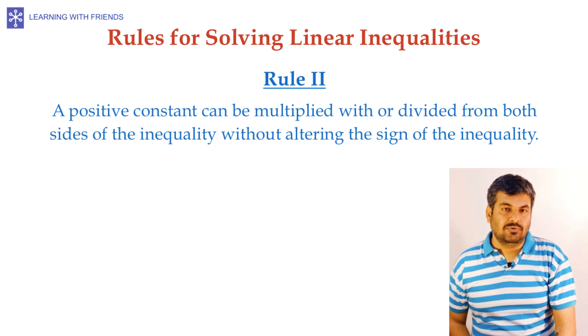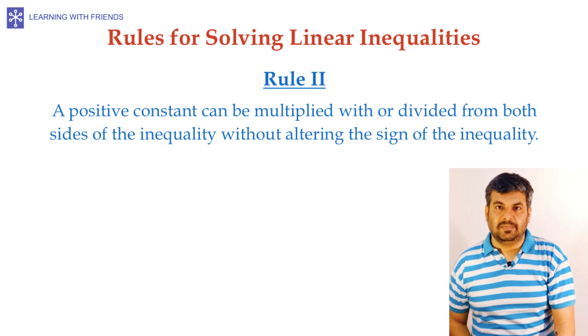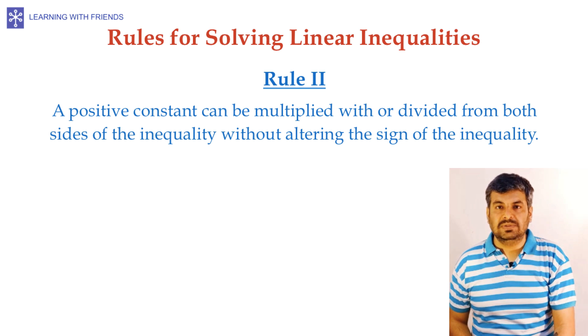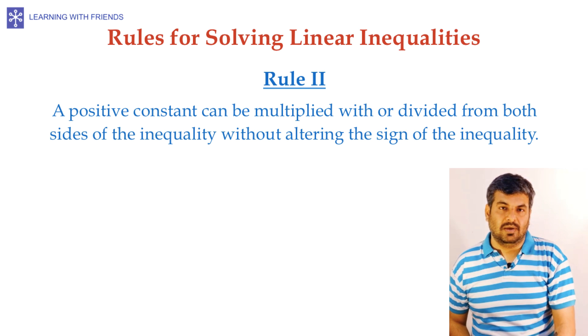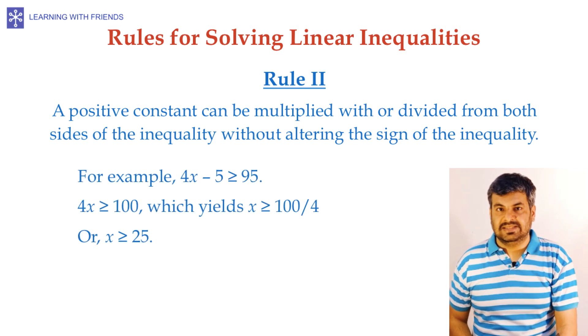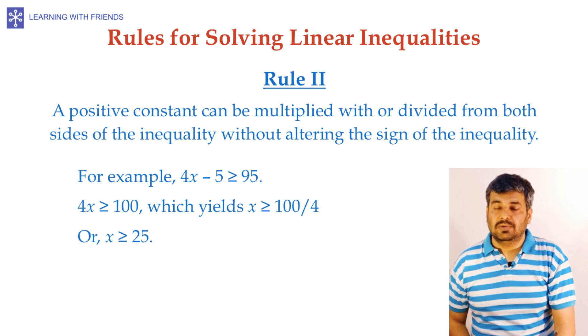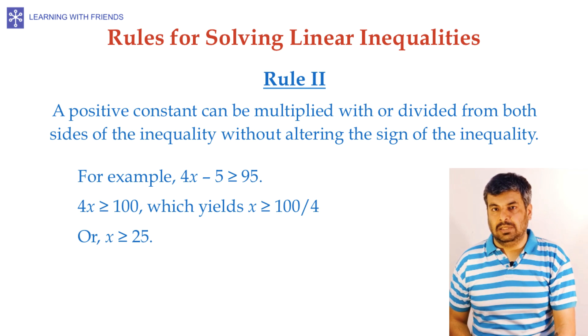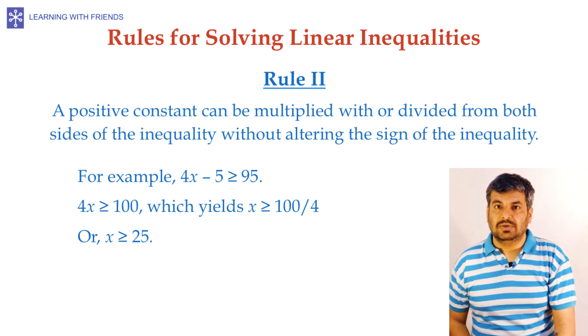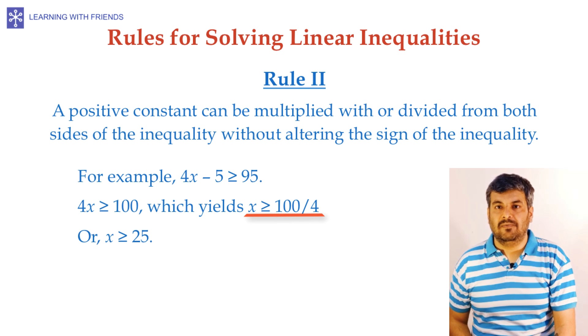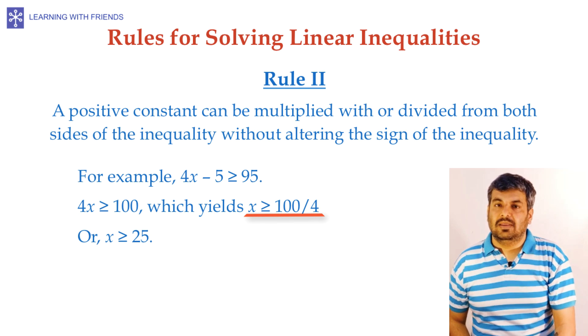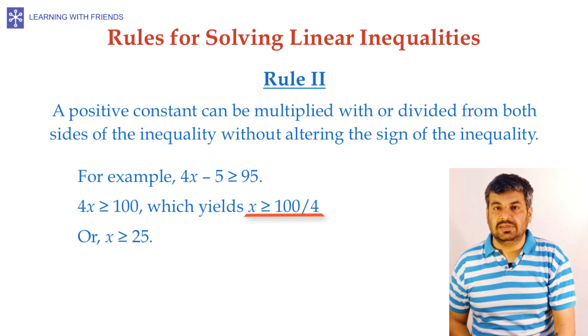Let's look at the second rule. A positive constant can be multiplied with or divided from both sides of the inequality without altering the sign of the inequality. If we were to continue our previous example where we had 4x greater than or equal to 100, to isolate x, we would have to divide both sides of the inequality by 4. So that on the left-hand side we have x and on the right-hand side we get 100 upon 4 which is 25. Therefore, x is greater than or equal to 25 is the solution for this inequality.